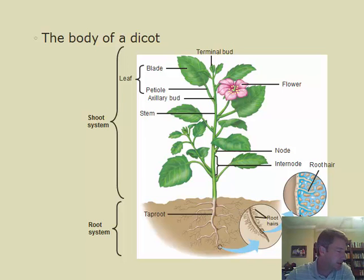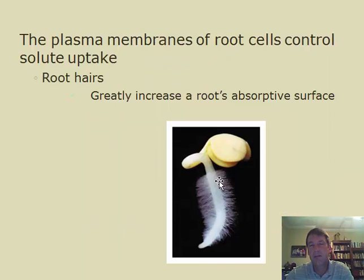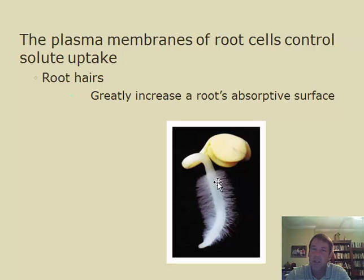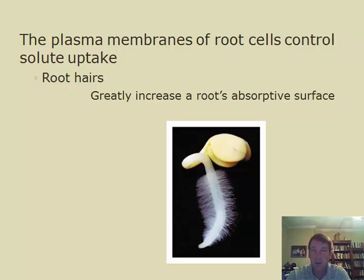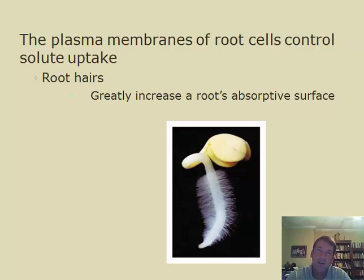Roots also have root hairs — tiny hair-like structures that come off the root, visible very distinctly on seedlings. They act somewhat like a sponge, giving the root more surface area to absorb water and nutrients. This greatly increases the absorption surface for the root.